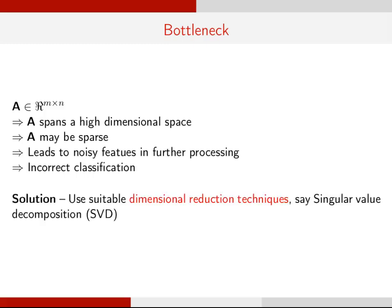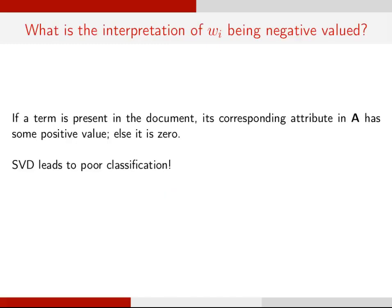A solution to this would be to use suitable dimensional reduction techniques, such as singular value decomposition. If a term is present in the document, its corresponding attribute in A has some positive value, else it is 0. So having negative-valued elements in the matrix does not make any sense. Clearly, SVD is unsuitable in this context.